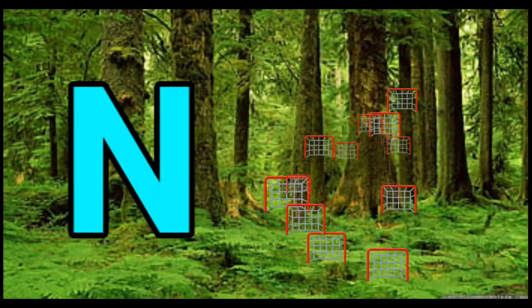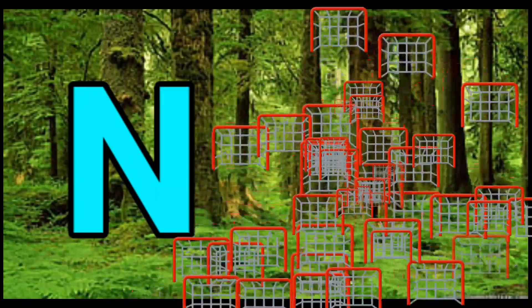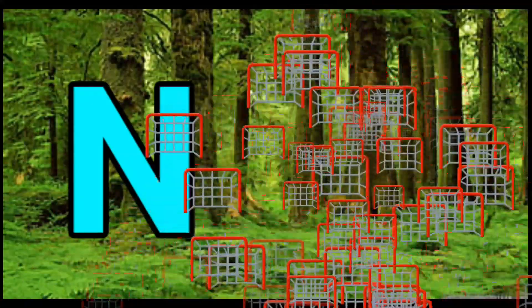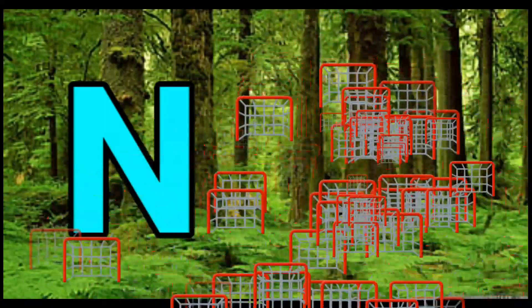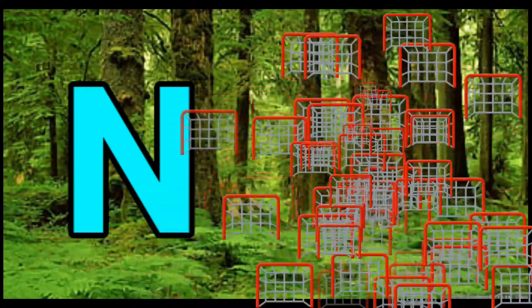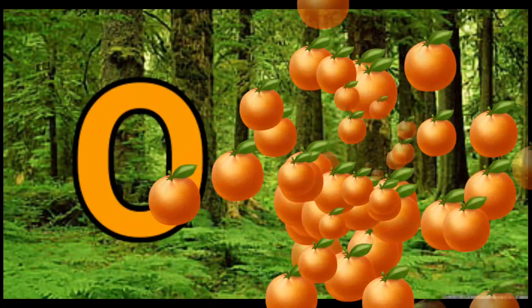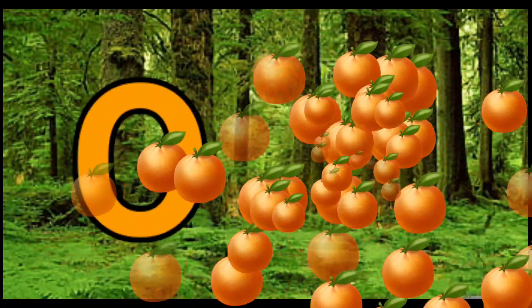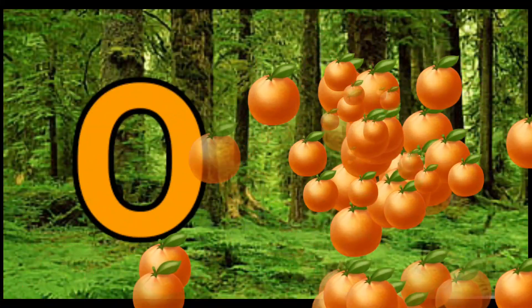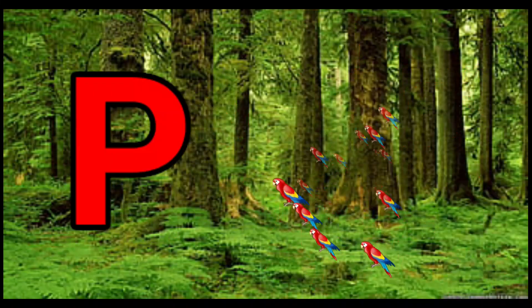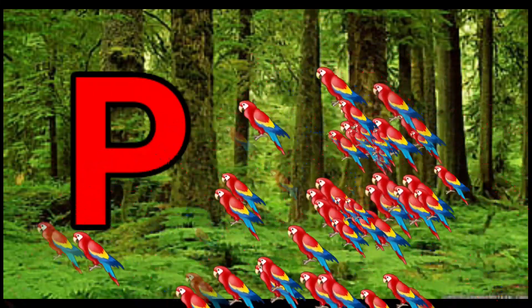N is for Net, N-N-Net. O is for Orange, O-O-Orange. P is for Pet, P-P-Pet.